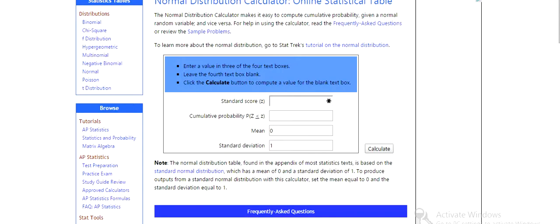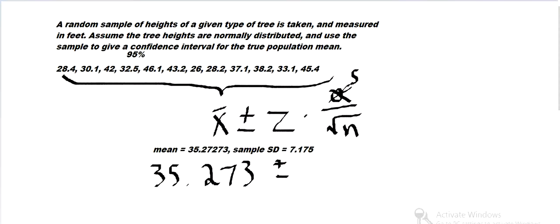And we're going to load that in the normal calculator. Just a second. Okay, we've got our normal calculator up. We need the Z value for, let's see, this is a 95% confidence interval. So we're looking for the Z value. We're going to have a 95% confidence. So that's 95%. And we're looking for the Z value.